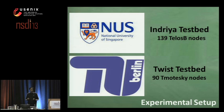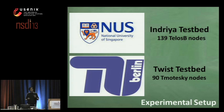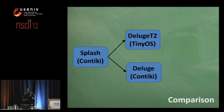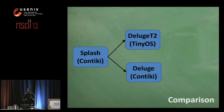Twist is a testbed facility available at the Technical University of Berlin and had 90 T-Mote Sky devices at the time of our experiments. We compare SPLASH against Deluge T2 implemented in TinyOS, which is the most commonly used dissemination protocol in the community.